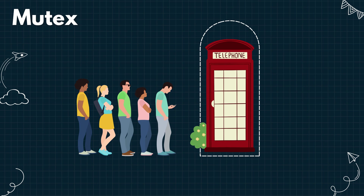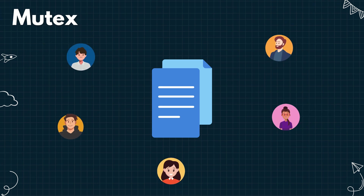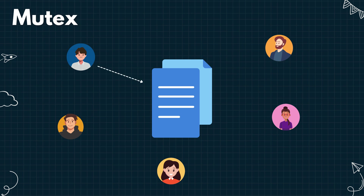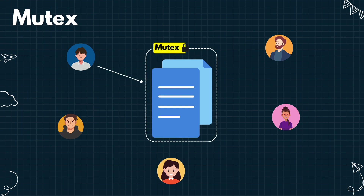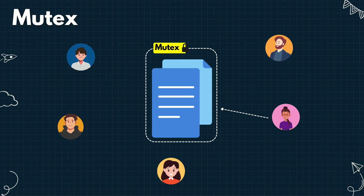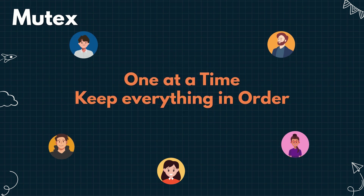Now let's bring that idea into a technical scenario. Suppose you are building a collaborative document editing app. Multiple users may try to edit the same document at the same time, but allowing simultaneous writes can lead to conflicts or data corruption. So the system needs to synchronize access. A user sends a write request; the system locks the document using a mutex, allows the user to write, then releases the lock so the next user can proceed. This way the document is always updated safely and consistently, even when many users are trying to contribute at once.